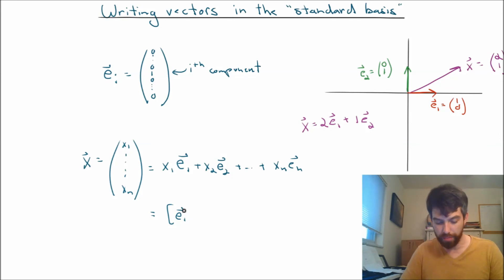This is the matrix whose first column is e1, second column is e2, and so on until its nth column is en, multiplied by this vector x. So indeed, this linear combination can be thought of as a particular matrix—a matrix whose columns are these standard basis vectors. In other words, it's a matrix with ones down the diagonal and zeros everywhere else, a very nice matrix, multiplied by this vector x.